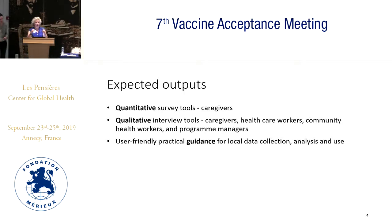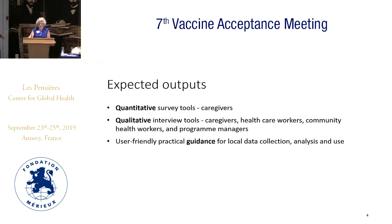There are a few working group members here, and I particularly want to acknowledge Noel Brewer and Kerry Wiley who have been part of the core group. Our expected outputs are a quantitative survey tool delivered to caregivers of children under five years of age, and qualitative interview tools delivered to caregivers, health care workers, community health workers, and program managers to get that more contextual, systemic perspective, along with user-friendly practical guidance for actually using the tools.